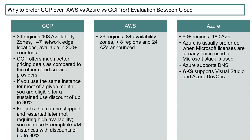GCP offers much better pricing deals compared to AWS — they don't charge on an hourly basis or pure pay-as-you-go; they actually charge minute to minute, which is a bigger difference if you want to save money on compute engines. If you use the same instance for most of a given month, you're eligible for a 30 percent discount automatically.